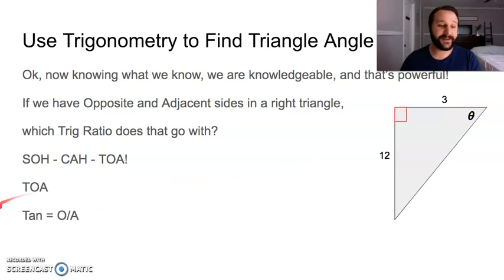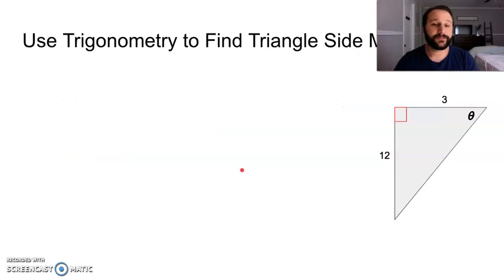I like to use tan in my examples, tangent, because tangent gets overlooked in the rest of trigonometry. It is important, but sine and cosine end up kind of taking the spotlight away. So I like to give it a little spotlight here in early trigonometry.